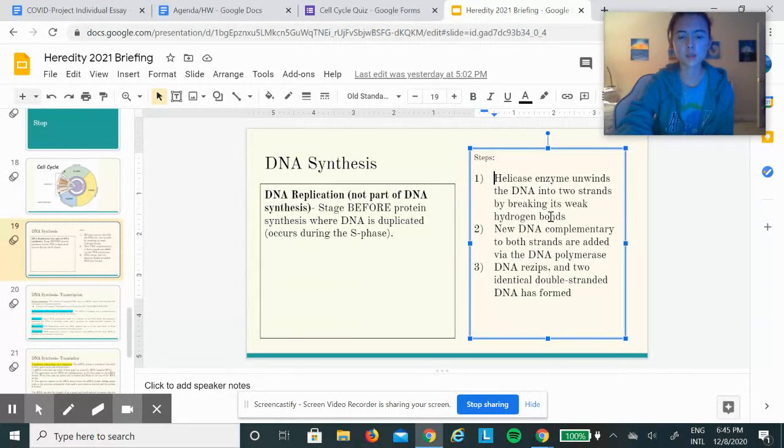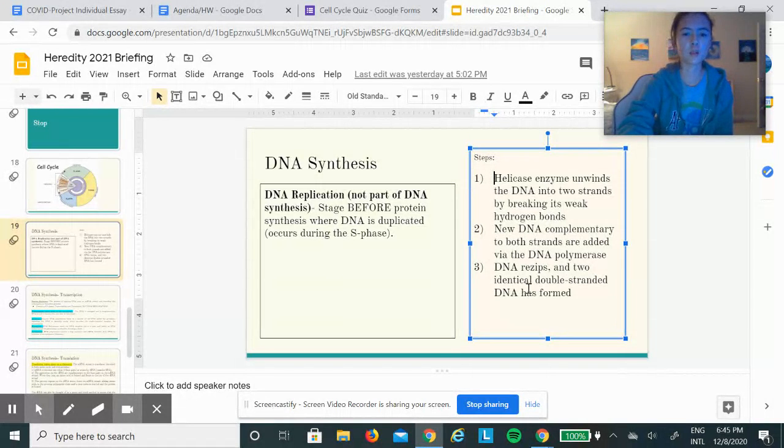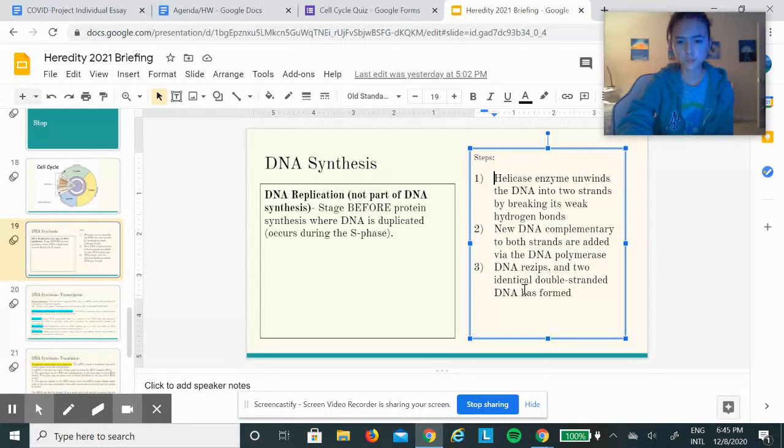New DNA complementary to both strands are added through DNA polymerase. Complementary means that the nitrogen bases on the DNA match up with the bases formed by DNA polymerase, so they fit together like a puzzle.